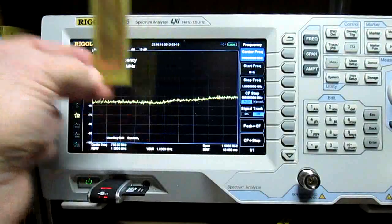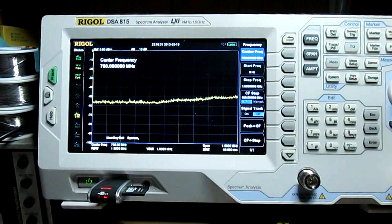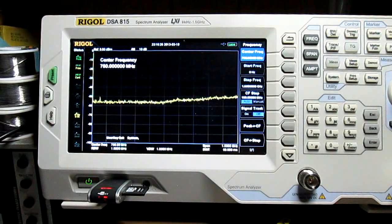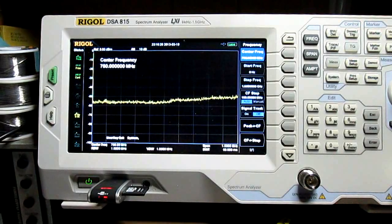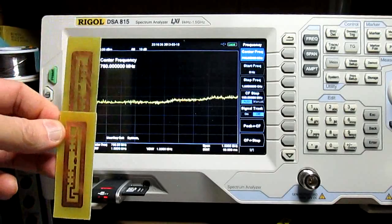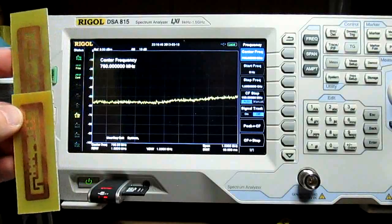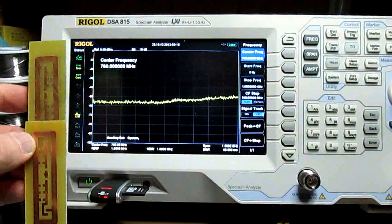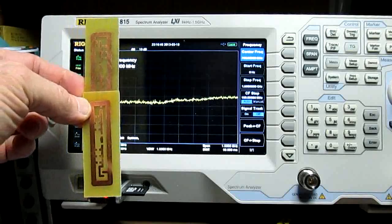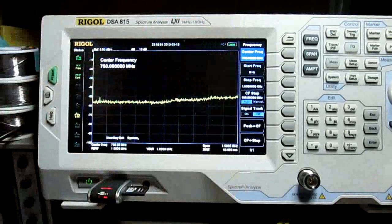Now the idea behind a tracking generator is that it's synced with the window in the analyzer that it's looking for the signal in. So they're kind of going across and it's generating the signal in the same window that it's looking for a signal. If it does go through whatever amplifier or filter you're checking out, it'll show up on the screen because they both track - the generator output tracks the window that it's receiving on to look for a given signal.